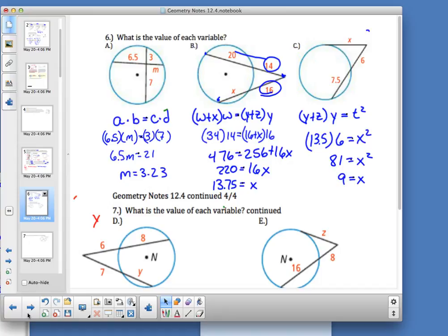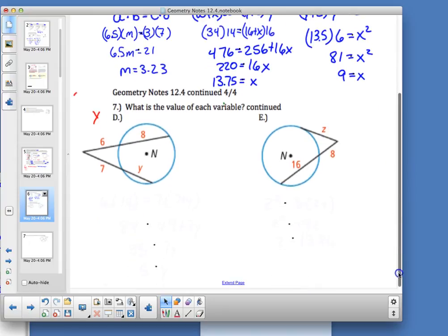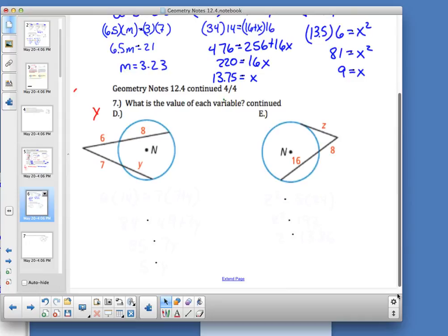Hopefully in 6C, I have a numbering issue, but hopefully you're okay. You get your nine. And the setups for this next one. I've got outside times entire length. 6 times 14 is equal to 7 times 7 plus y. And I've got my outside times entire length. Z squared equals 8 times 24. Now, after you finish, go ahead and do 8.